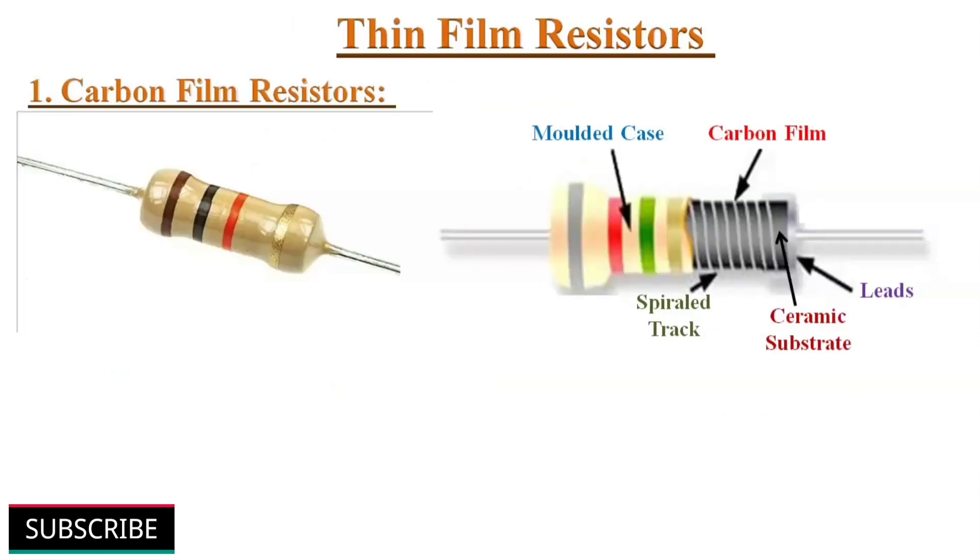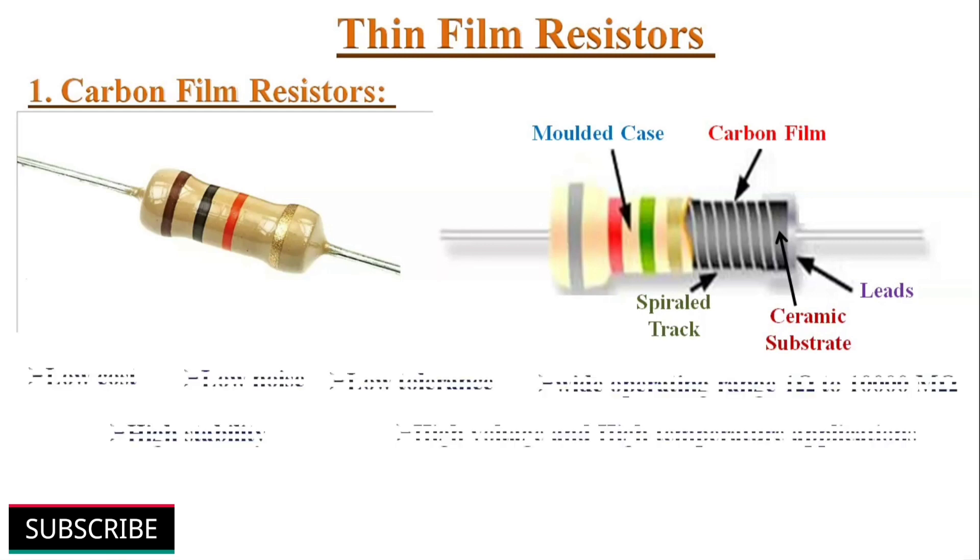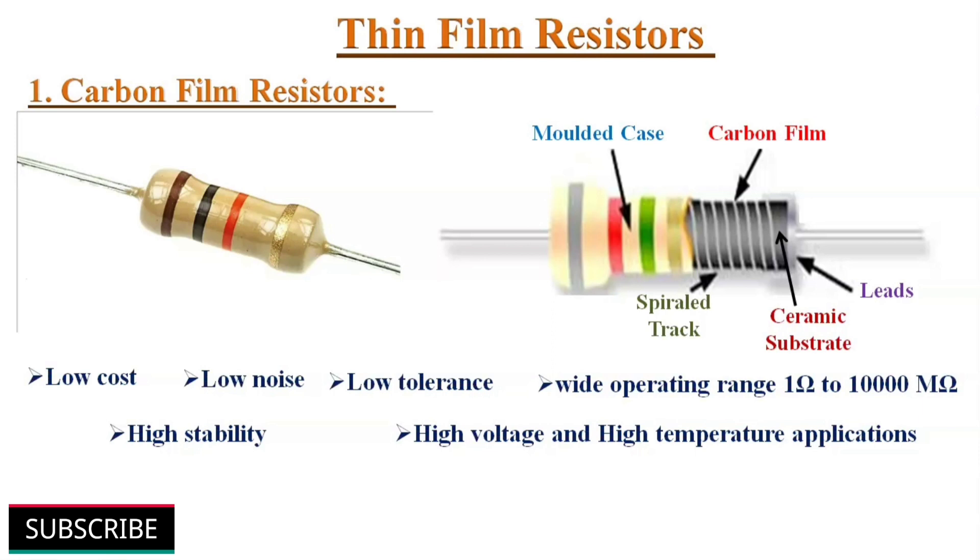Now the thin film resistors. The first type of thin film resistor is carbon film resistor. If you observe the internal structure, you will find that on ceramic substrate, the thin layer of the carbon film is deposited in the form of spiral tracks. Just by varying the pitch of this spiral tracks, the resistance values can be varied. The main advantages of these resistors are, they are available at low cost, produce low noise, tolerance value is also low, have a wide operating range and high stability. These type of resistors are used in high voltage and high temperature applications.